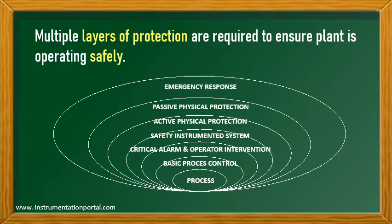And emergency response procedure. If an incident occurs, these layers shall protect the facilities. If a particular protection layer fails to handle it, then the higher protection layer is expected to provide protection and handle the hazards that occur. In this protection layer, there are layers that work with automation: basic process control system and safety instrumented system.